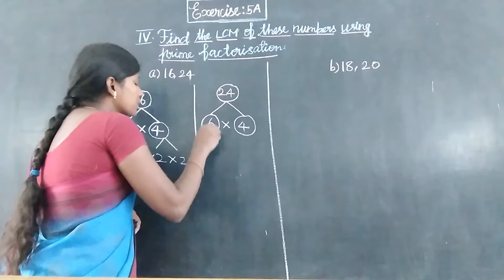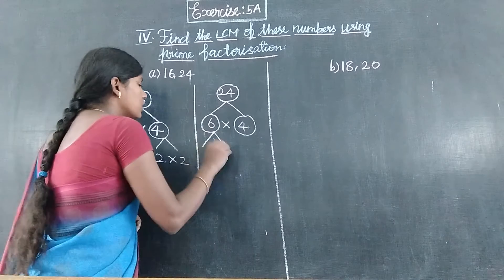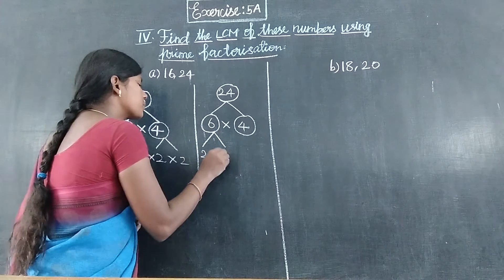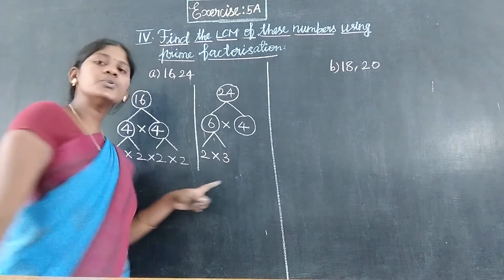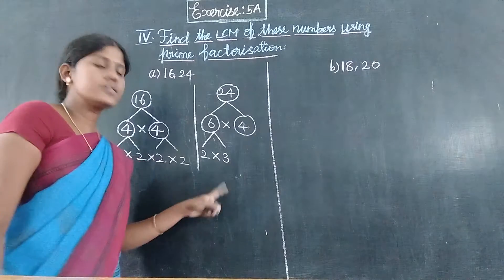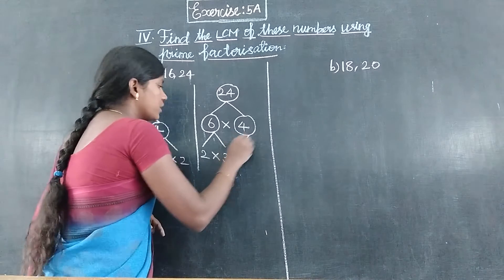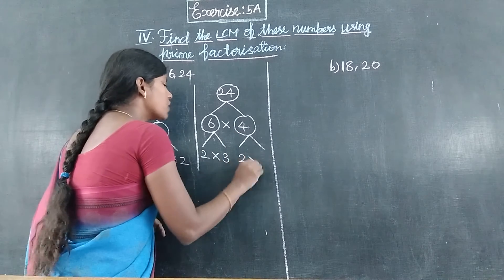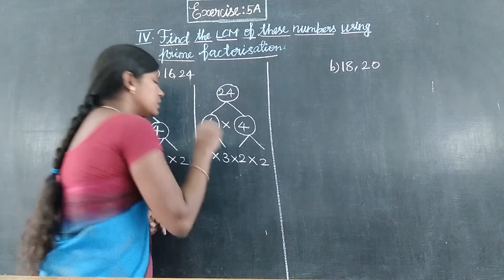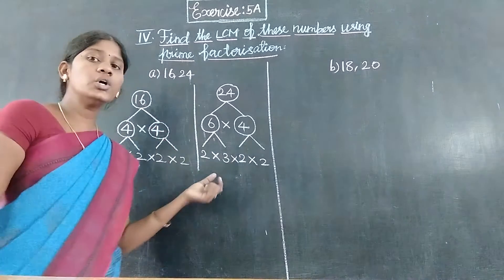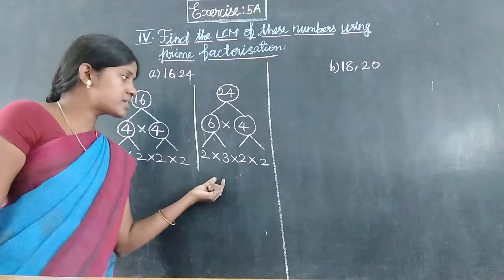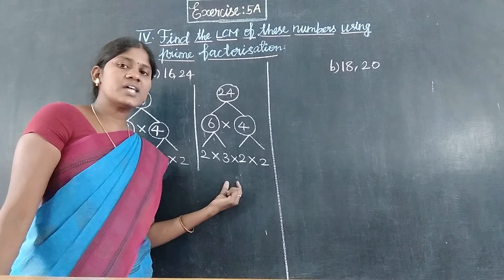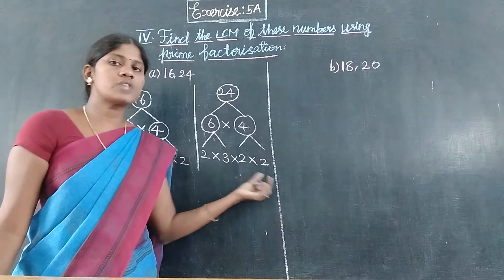So we break each composite number again. The number six: two threes are six. Next, four: two twos are four. So both 6 and 4 are broken into their prime factors.